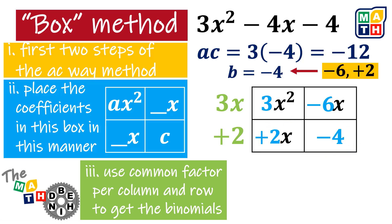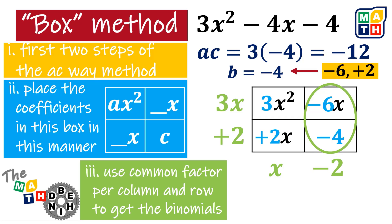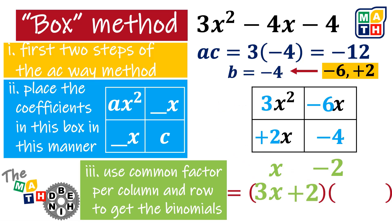We look for the factors per row and column to find the binomials. The first row gives us 3x, and the second row gives us positive 2, using common monomial factoring. As for the first column, the common factor is x, while for the last column, the common factor is negative 2. Using all four common factors, we have the pair of binomials: (3x plus 2) times (x minus 2).